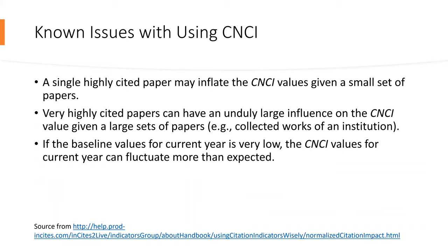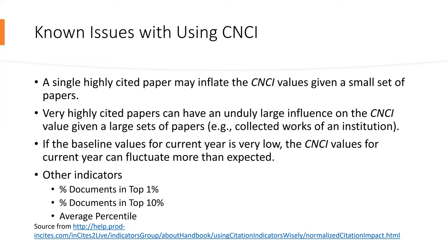However, there are some issues with using Category Normalized Citation Impact. A single highly cited paper may inflate the CNCI value given a small set of papers. Very highly cited papers can also have an unduly large influence on the CNCI value in a large set of papers. If the baseline values for the current year are very low, the CNCI values can fluctuate more than expected. Insights therefore suggests looking at other indicators alongside the CNCI, such as percentage of documents in the top 1%, percentage of documents in the top 10%, and average percent rank.